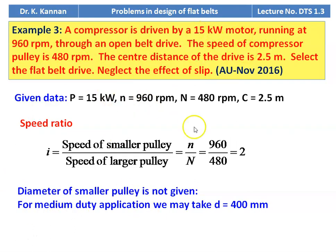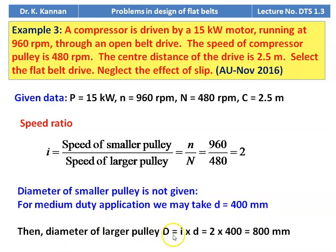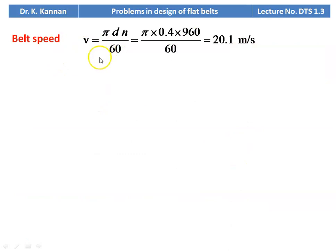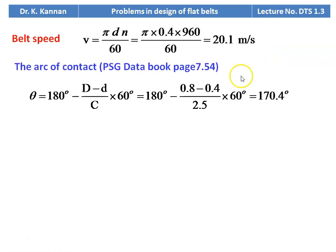Since 15 kW is considered a medium duty application, we take smaller pulley diameter d = 400 mm. Larger pulley diameter D = I × d = 2 × 400 = 800 mm. Belt speed V = π d n / 60 = π × 0.4 × 960 / 60 = 20.1 meters per second. Arc of contact: θ = 180 − [(D − d) / C] × 60 = 170.4 degrees.